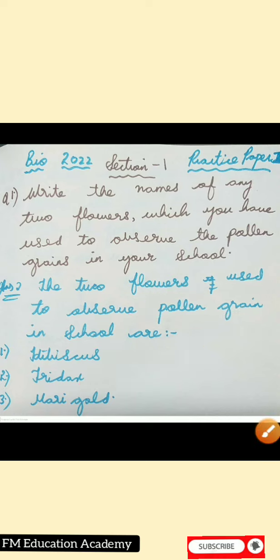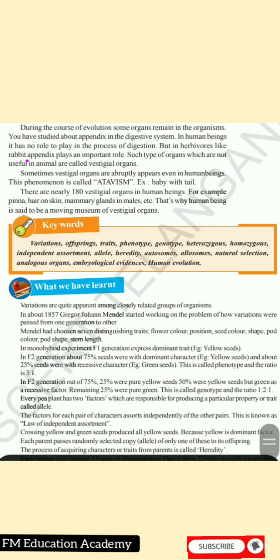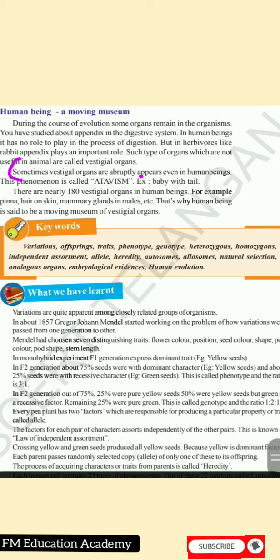Question 2: What is atavism? Atavism is in the chapter Heredity and Evolution. Sometimes vestigial organs appear abruptly even in human beings — this phenomenon is called atavism. Example: a baby born with a tail. Vestigial organs are organs not needed for performing actions; when they appear suddenly in human beings, that is called atavism.